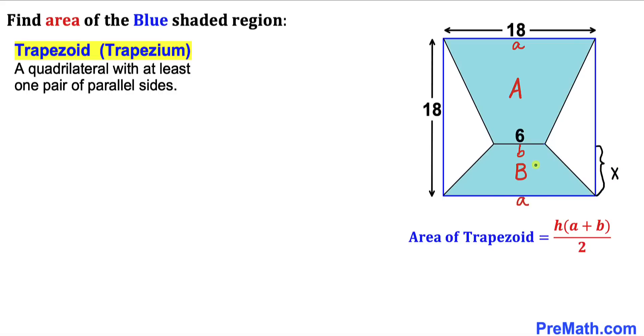So therefore the height of this trapezoid B is going to be X units, and we know that the whole length is 18 units. So therefore this length has got to be 18 minus X. So therefore the height of this trapezoid A is going to be 18 minus X.